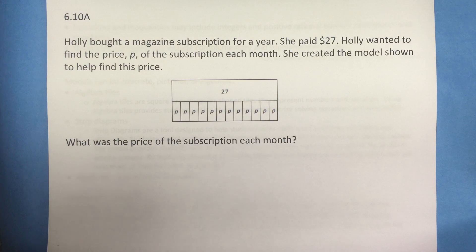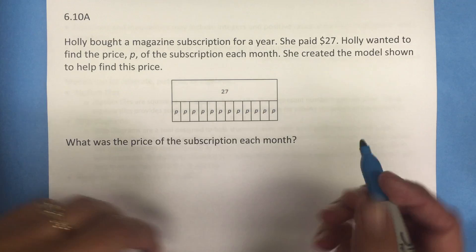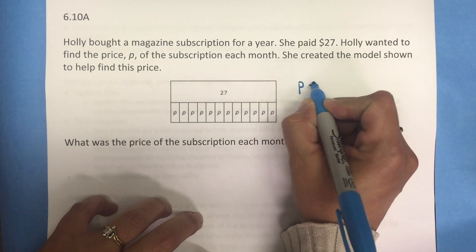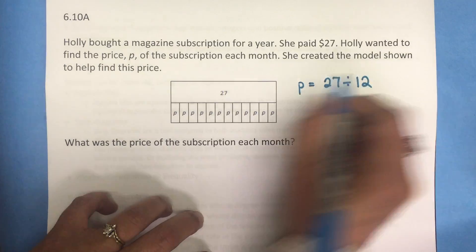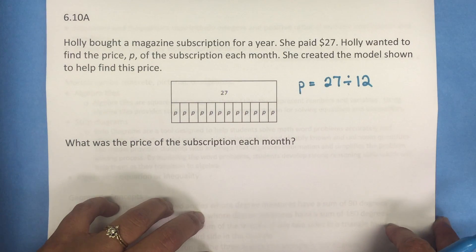Some students may look at this and say, okay, so P is just 27 divided into 12 equal parts. So some students may represent this problem and model by using the equation P equals 27 divided by 12.